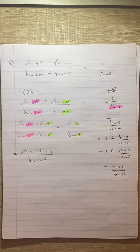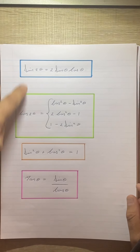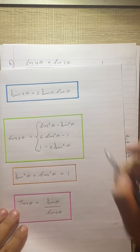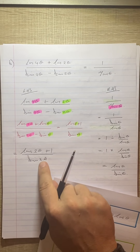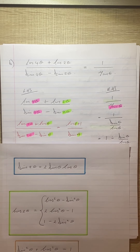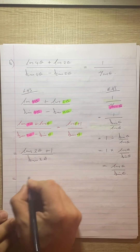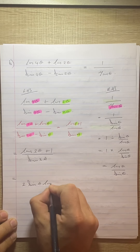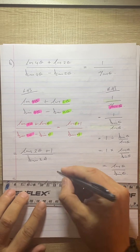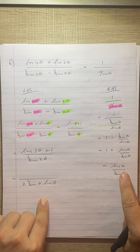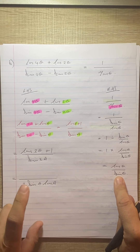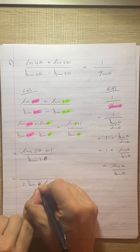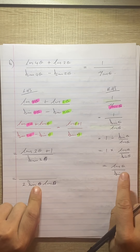Again we have a problem with cos 2θ — I don't know which of the three forms to use. So I'll start with the sin double angle since it can only be one thing. I'll leave the top and expand the bottom: we get 2 sin θ cos θ. Looking at the right-hand side, I've got sin θ and sin θ.